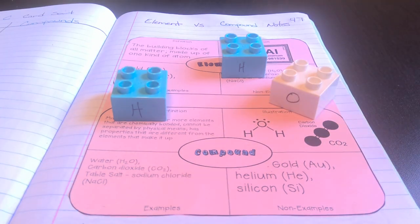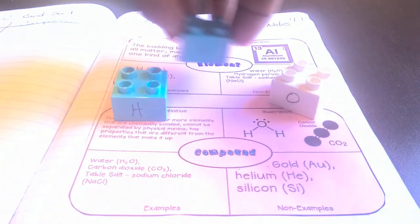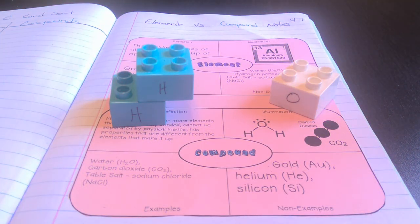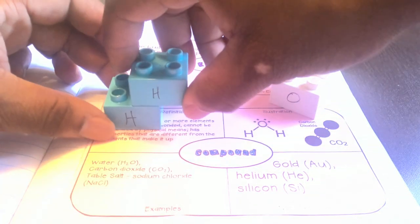Each element is represented by its own unique atom or color. If we put two of the hydrogen atoms together, we still have the element hydrogen, right? It's just two atoms of hydrogen, but they are the same.